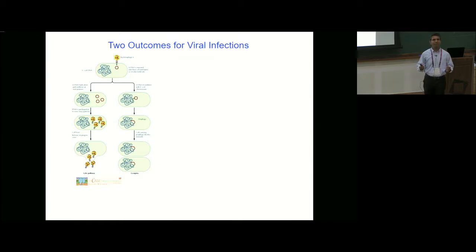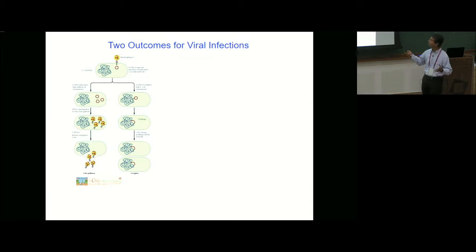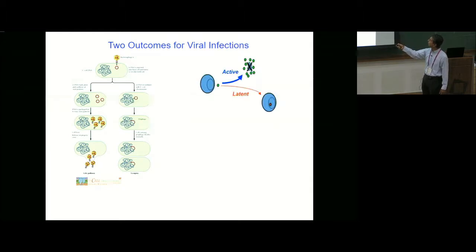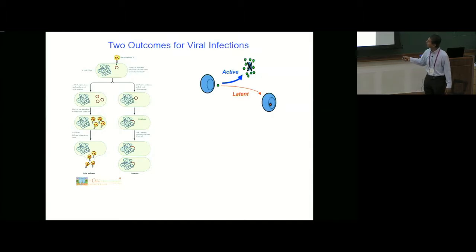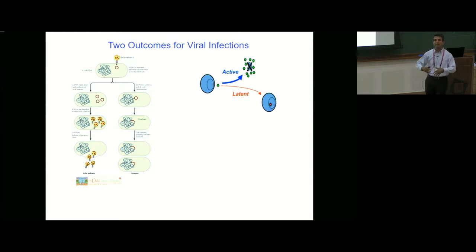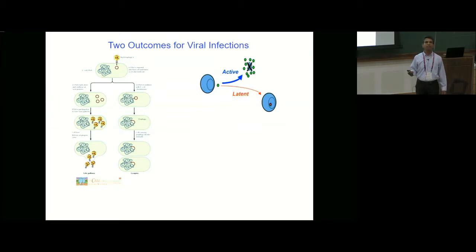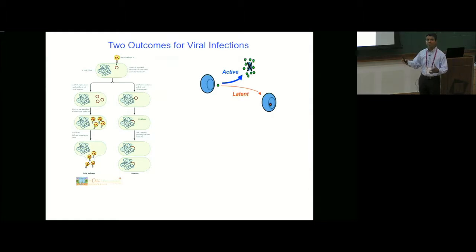In the 1940s when Luria and Delbrück performed these experiments, what was noticed was that when we infect the bacterium with this virus, there are two outcomes. One is lysis, in which the cell is ruptured, the cell is killed, and the virus replicates and spreads to other cells. But the other one is where it becomes latent — it integrates into the genome — and this option is called lysogeny. So the cells are genetically identical, the bacteria are identical, nevertheless the outcomes are different.